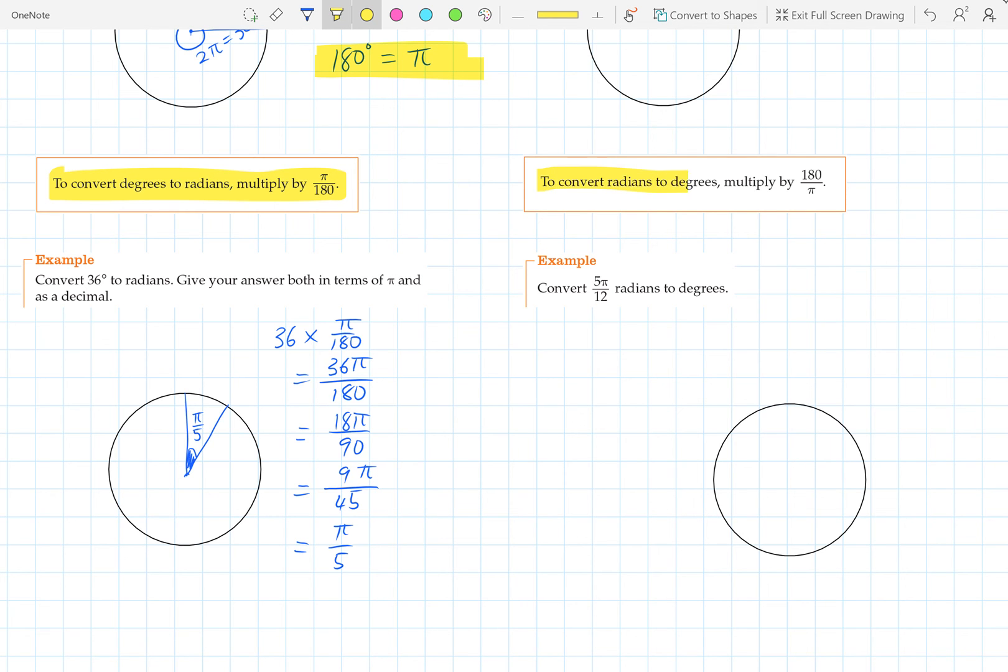looking at it the other way around, to convert radians to degrees, we can multiply by 180 over pi. So to convert this measurement to degrees, we would just take that measurement and times it by 180 over pi.